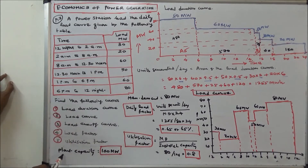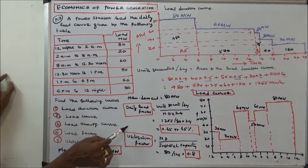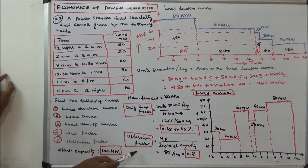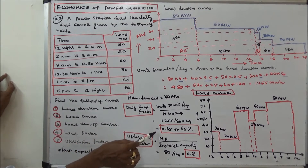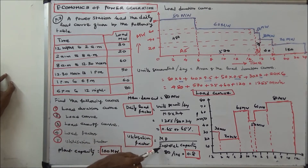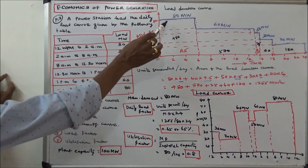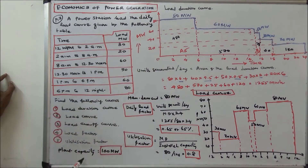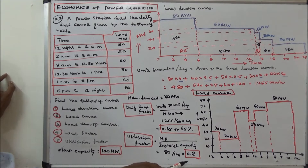The plant installed capacity is given as 100 megawatts, so we can easily calculate the utilization factor. Utilization factor equals maximum demand divided by installed capacity. Maximum demand is 80, installed capacity is 100, so 80 divided by 100 equals 0.8.